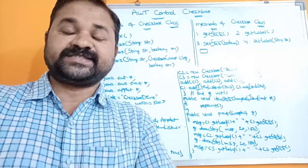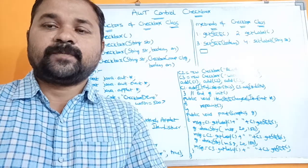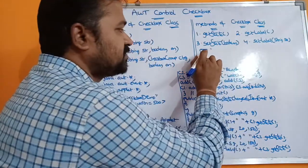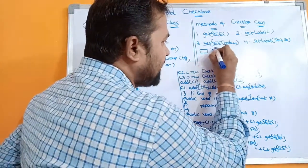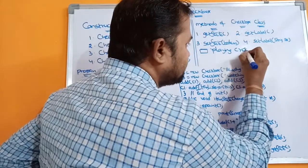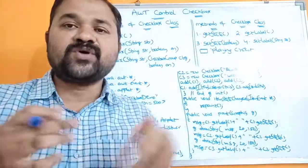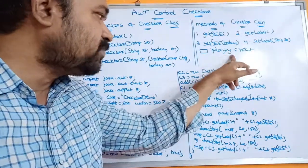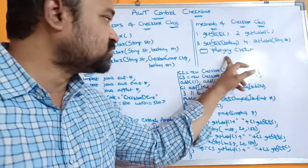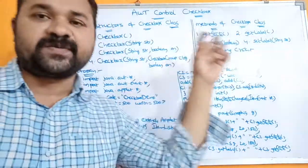The best example for checkbox is 'select your hobbies.' Playing cricket is the first checkbox, and the corresponding label is 'playing cricket.' A label is a string of text that describes the checkbox information. So every checkbox is associated with a label.